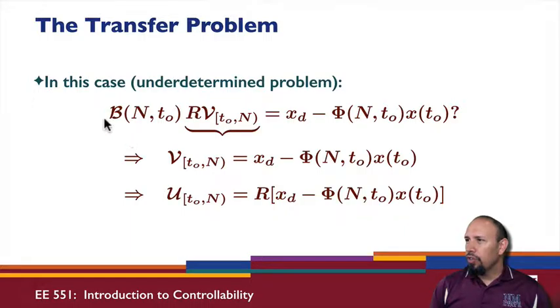So, we took advantage of the fact that this matrix was onto, this control map was onto, and that the range was all of R^n.